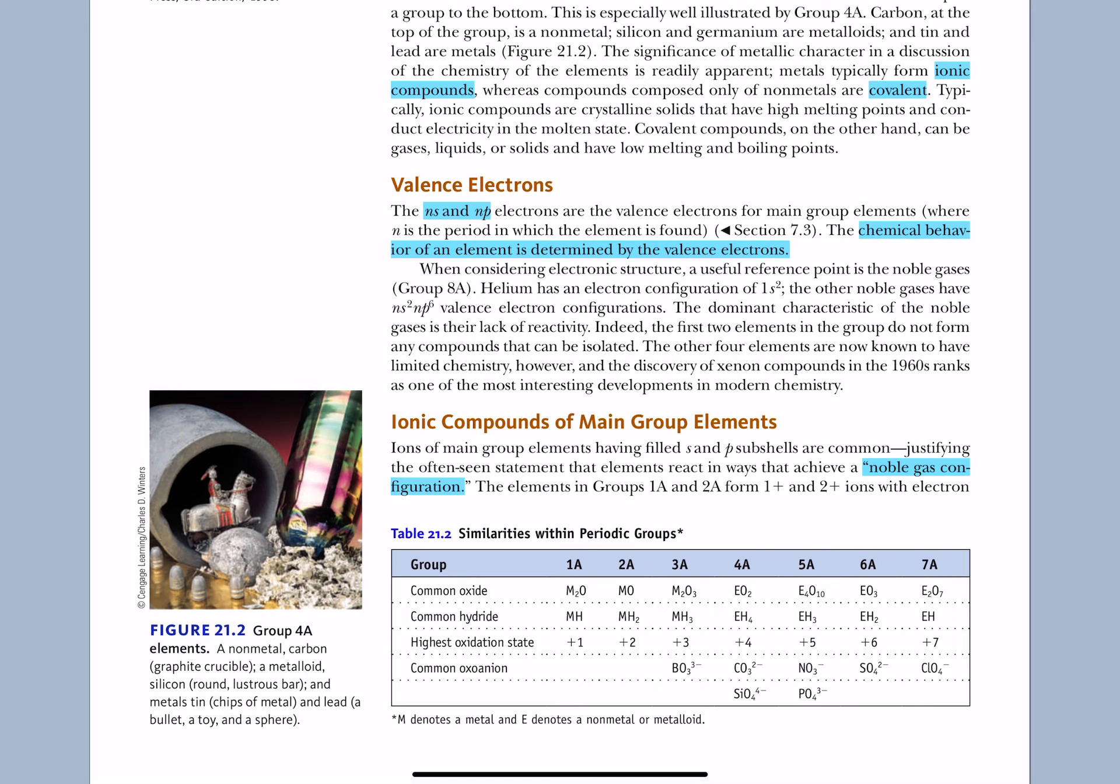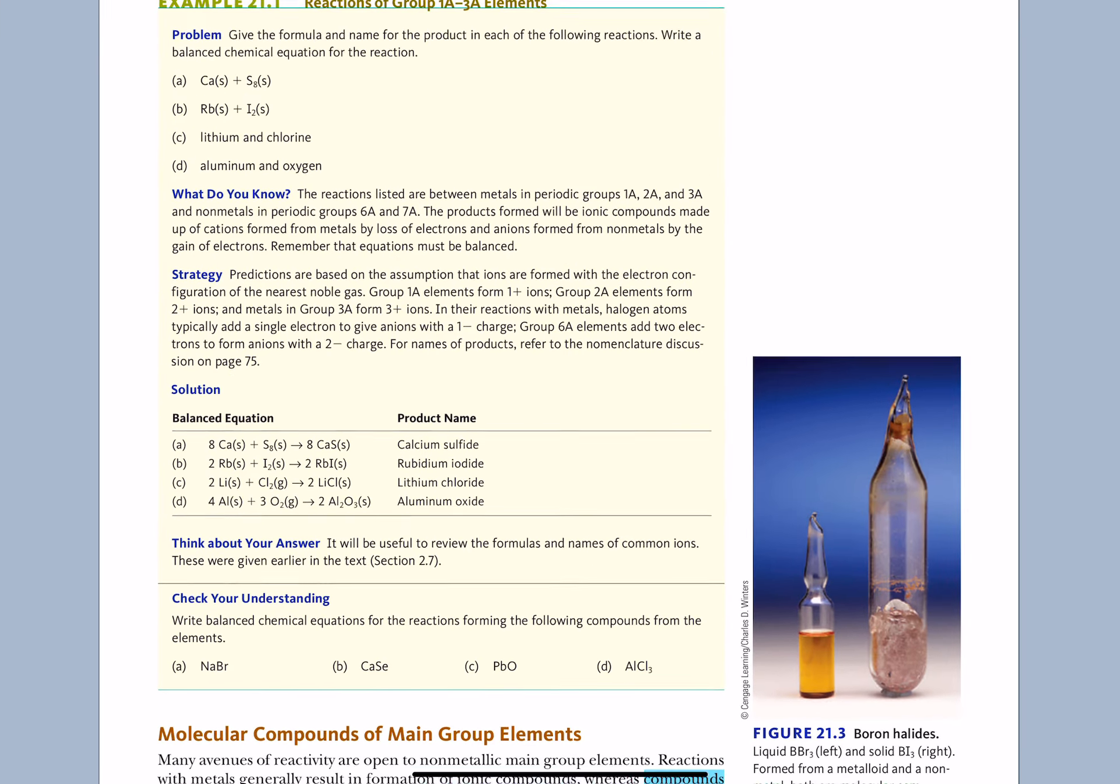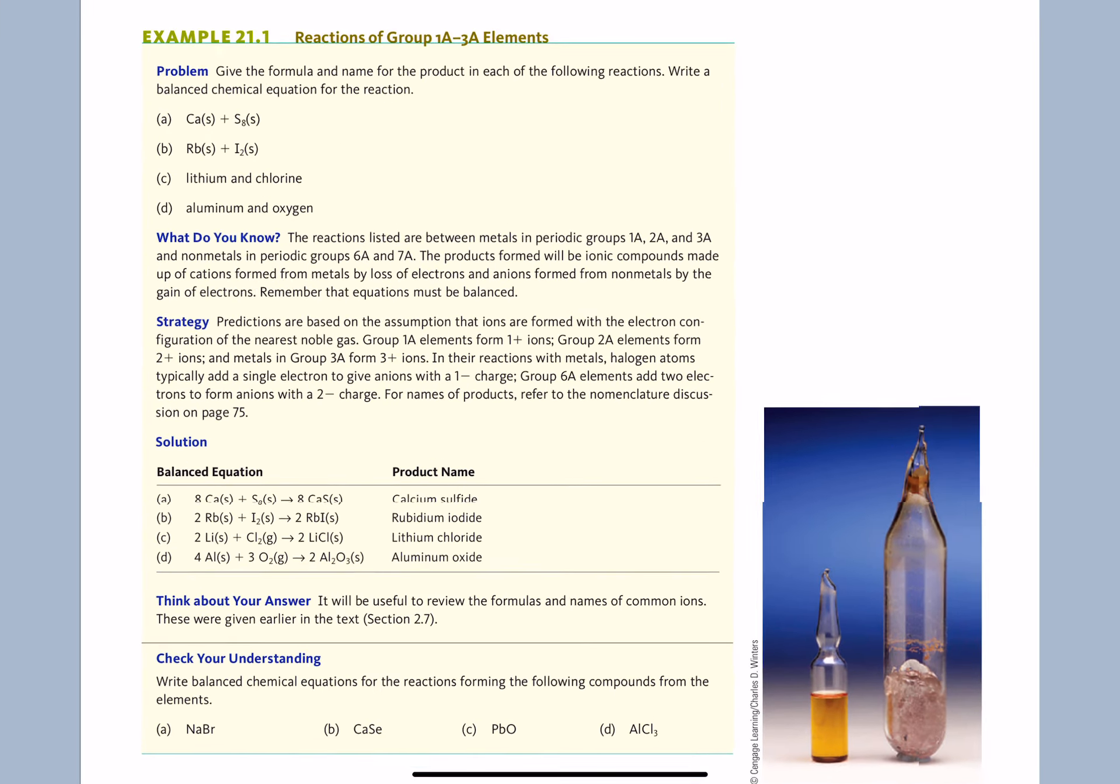Those are the valence electrons, a word you should be very comfortable with. We also know that the elements on the very right side are noble gases. They seem to have this octet, which makes them non-reactive. But, elements like to attain a noble gas configuration, which means they like to end up with eight electrons.